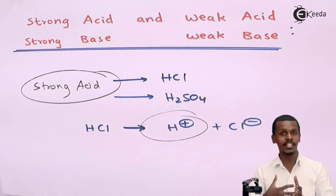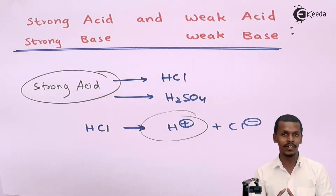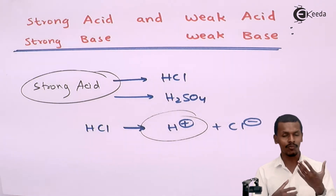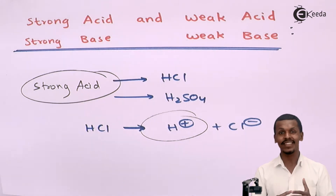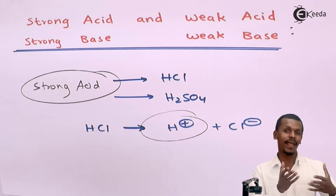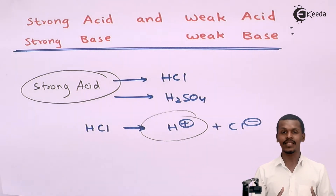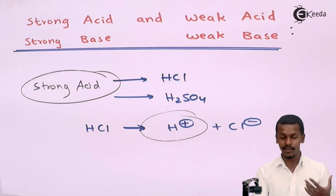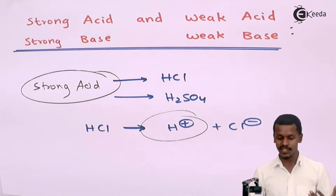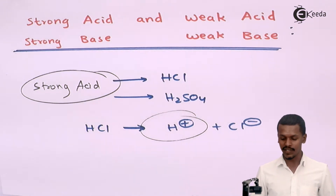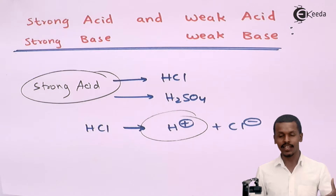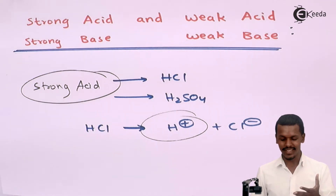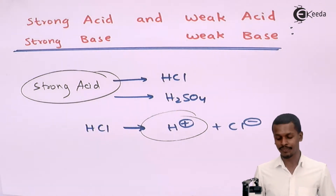The H+ ions produced on complete dissociation in water cannot be turned back to HCl. That is the reason they are called a strong acid — the H+ ions, also called protons, present in HCl or H2SO4 are what make them strong acids.